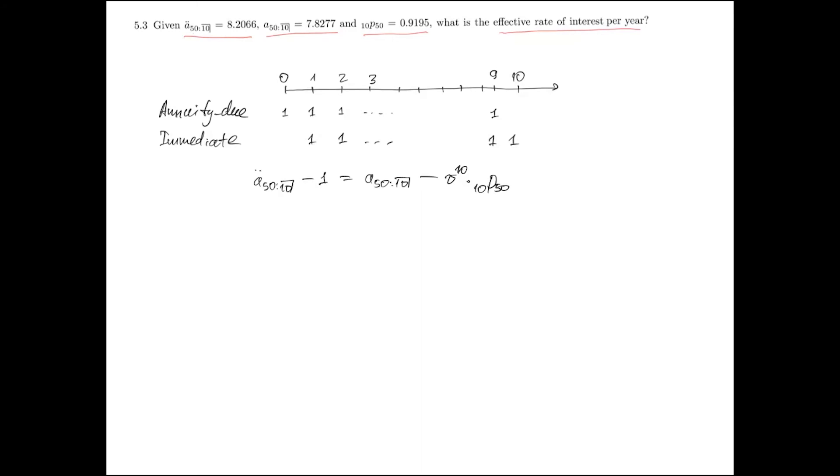In this equation we know all quantities except the discount factor. It means that we can solve for this factor.